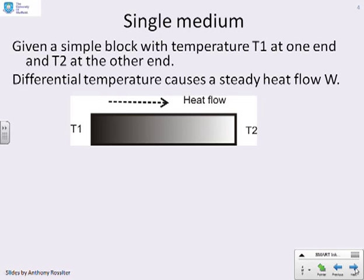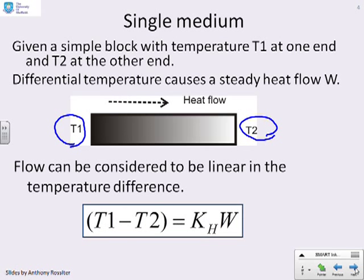Here we go then. We've got a simple block with a temperature T1 at one end and T2 at the other end. And we want to know what's the rate of heat flow or the steady heat flow W from one end to the other. What we're going to do is we're going to say, in general, you can approximate this by an expression of this type.